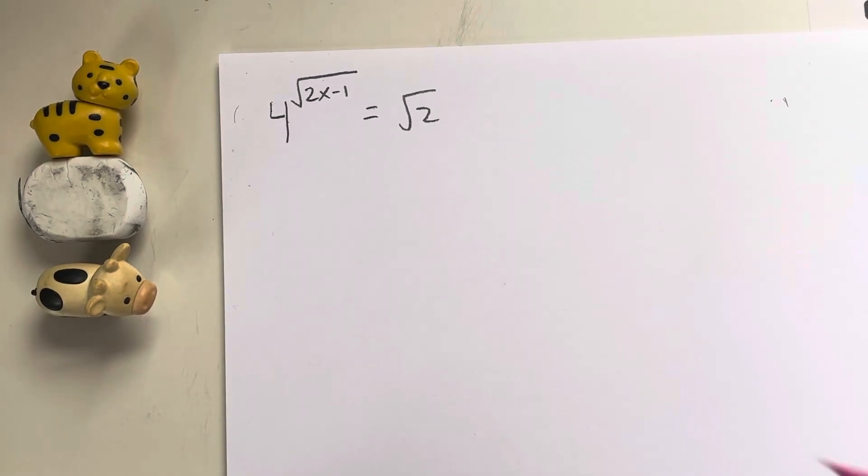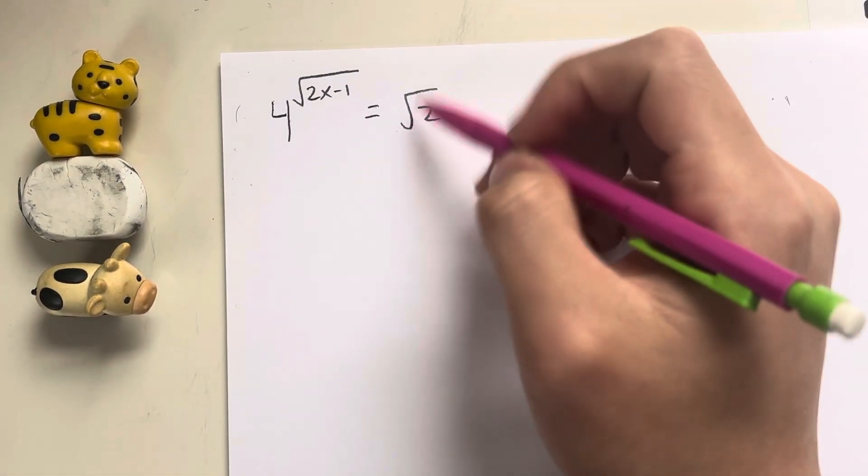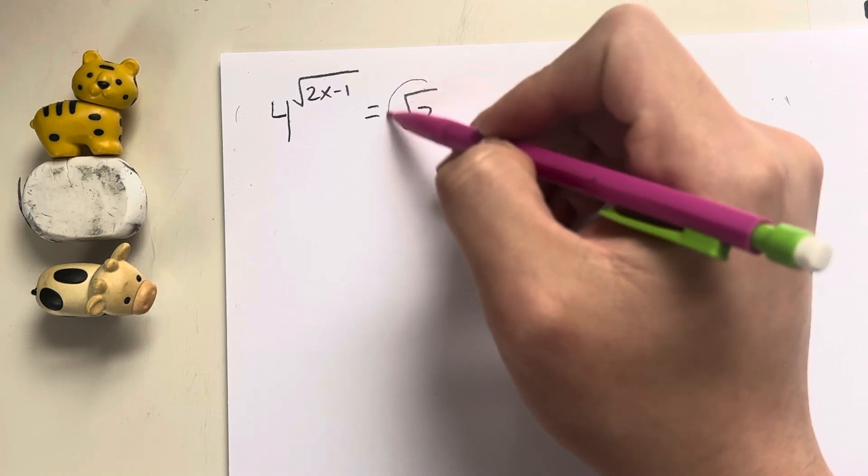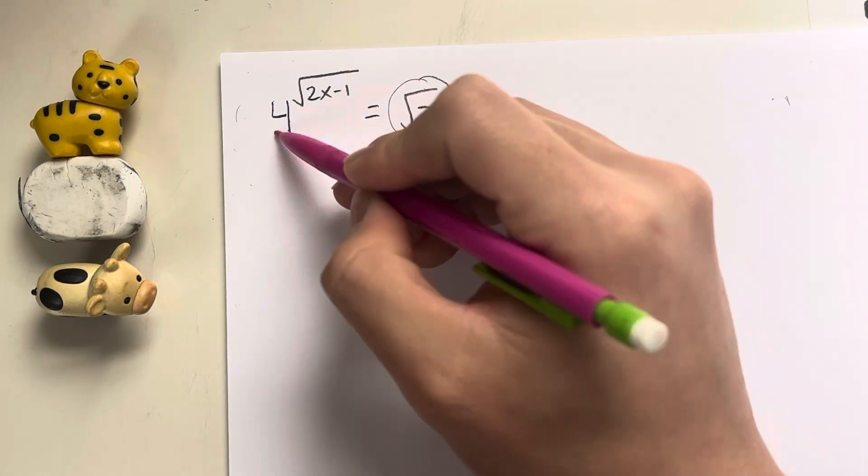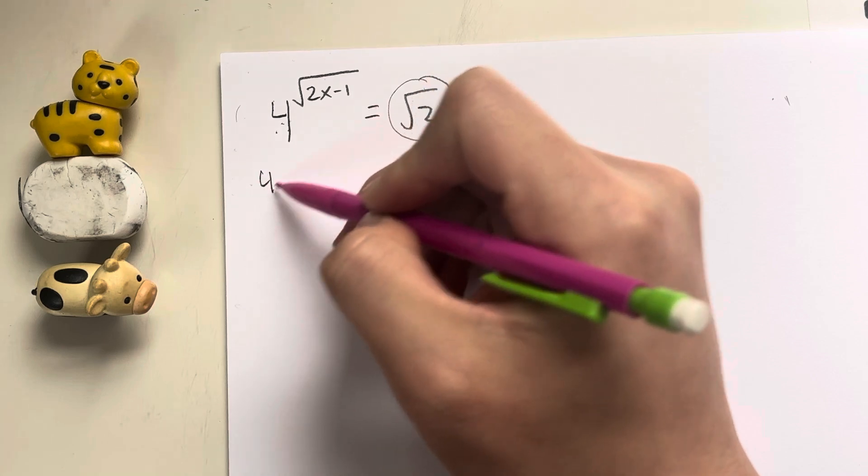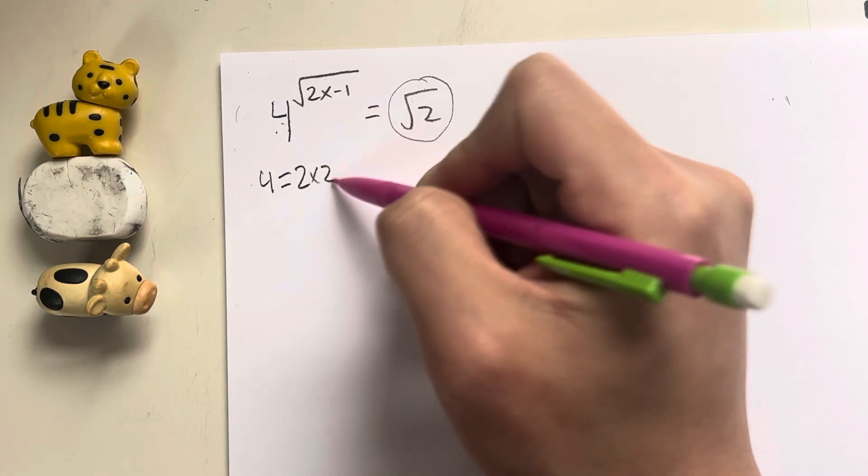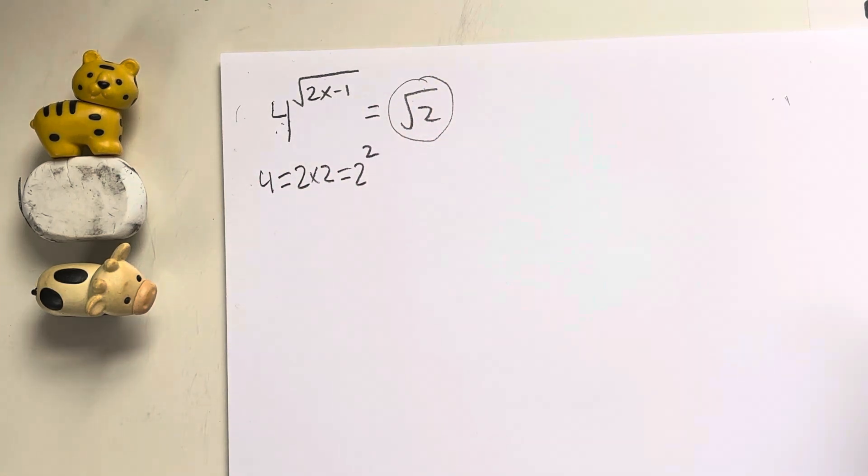Now, in order for us to solve this question, we have to remember a couple of rules. First, I'm going to try to convert this into a number we can work with. Because 4 to the something power, we know that 4 is equal to 2 times 2, which is equal to 2 to the second power.